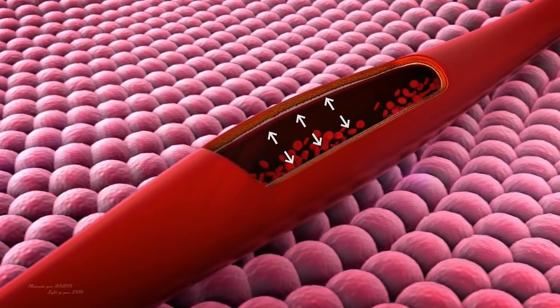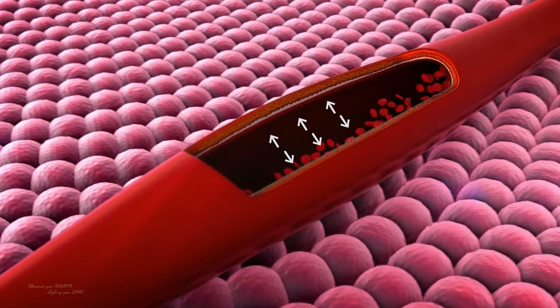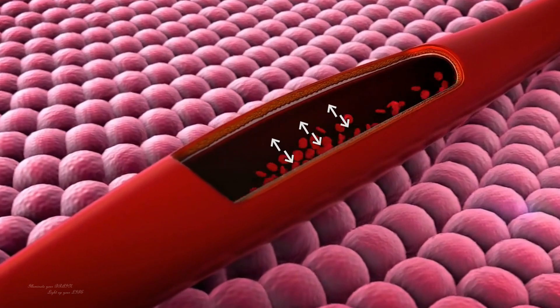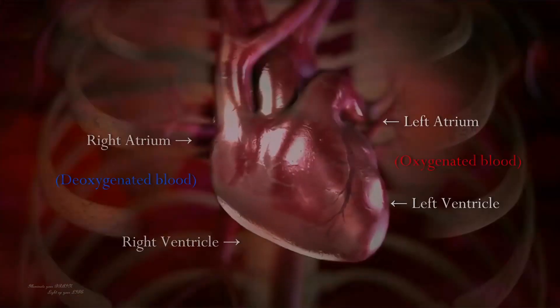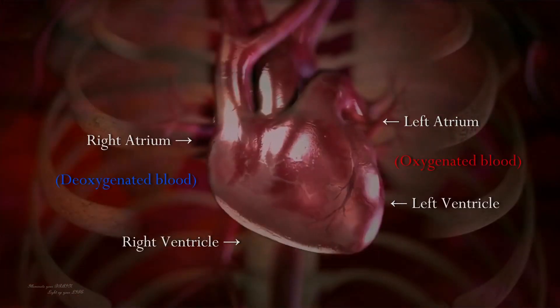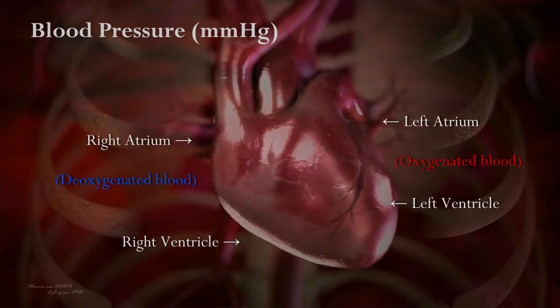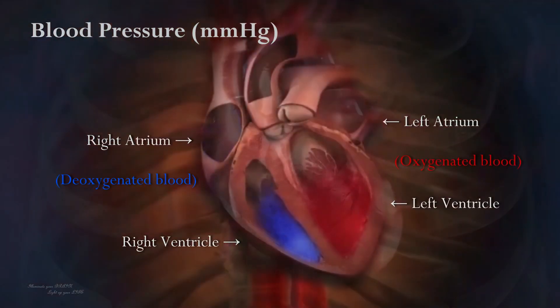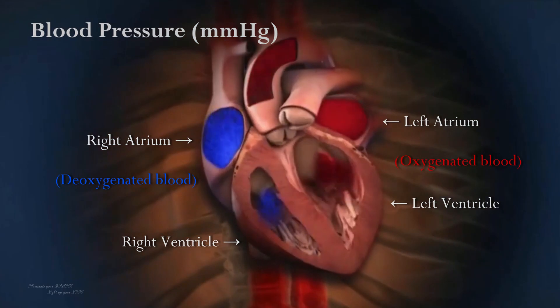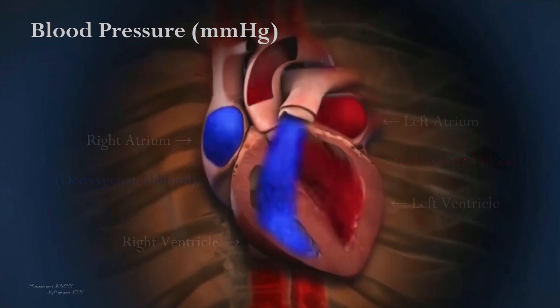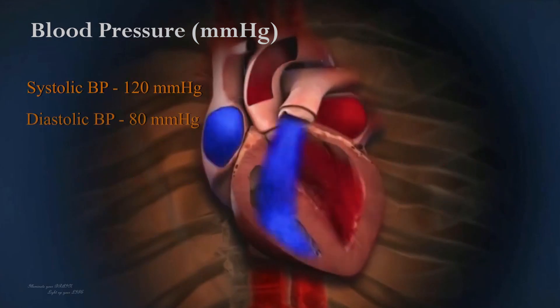Blood pressure is the force of blood against the walls of arteries as the heart pumps it throughout the body. It is measured in millimeters of mercury and consists of two numbers: systolic pressure and diastolic pressure.